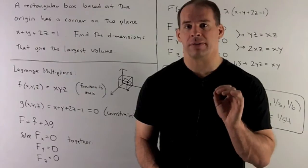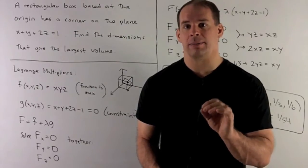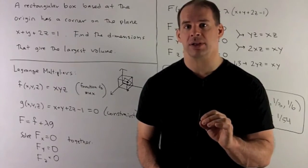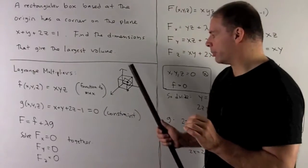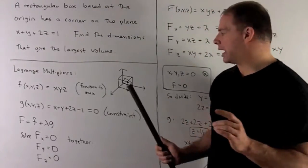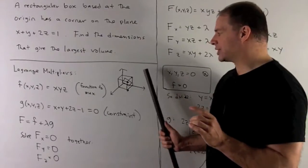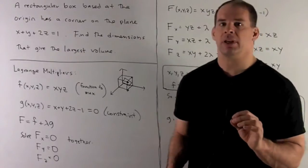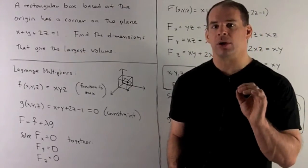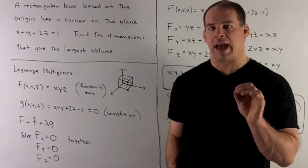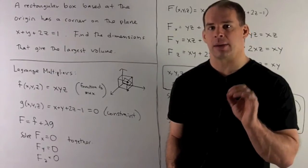First, I look for the function that goes with the quantity that we're trying to maximize or minimize. So here, draw our picture. We have a rectangular box. We'll call dimensions x, y, and z as usual. So we want to maximize volume, which is given by the function f equal to x times y times z.